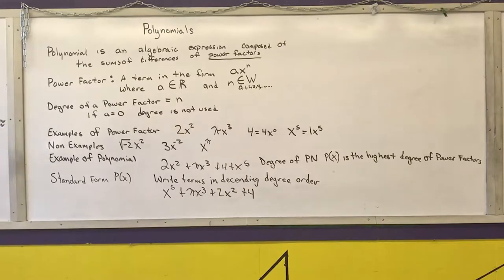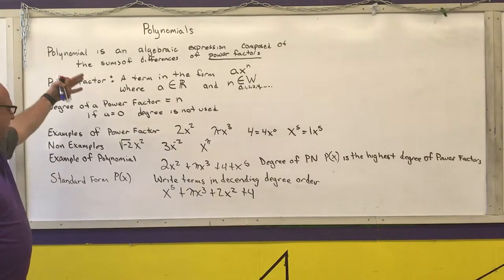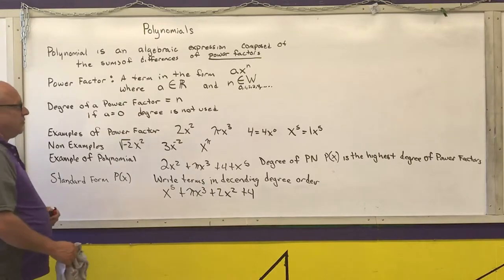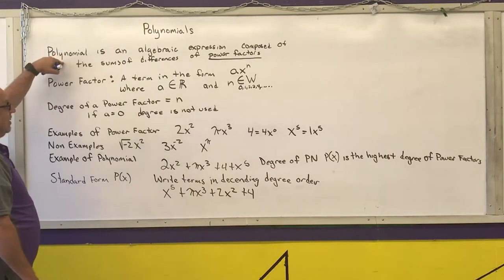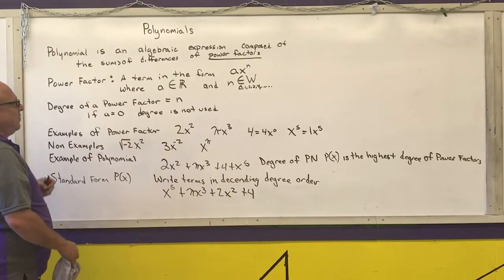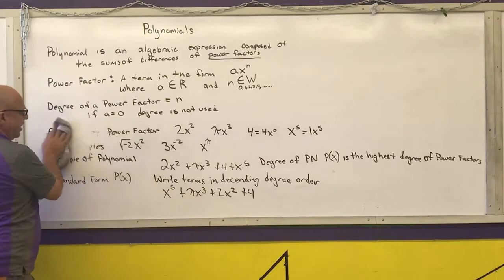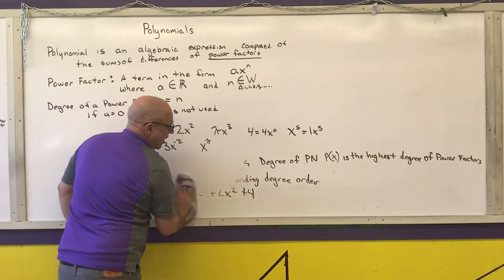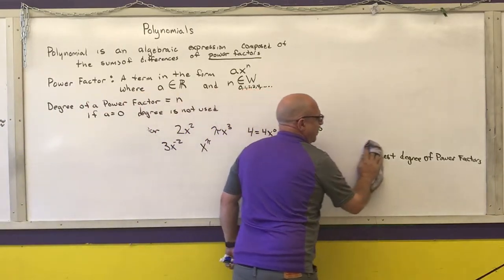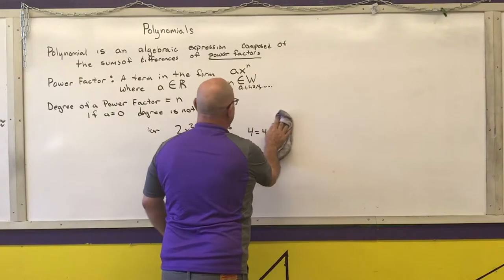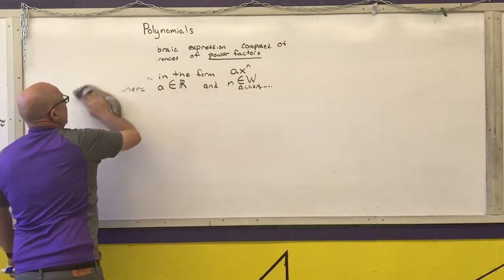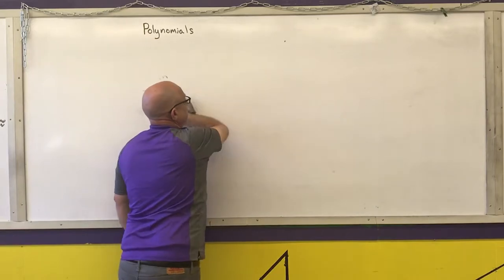That's the general definitions of stuff associated with polynomials. Now I'm going to give you the formal definition from your textbook. I presented it this way so that when I show you the formal definition, you can understand what it means.